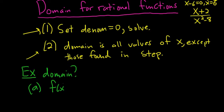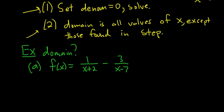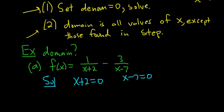Example a: f(x) = 1 over x plus 2, and f(x) = negative 3 over x minus 7. To find the domain, set the denominators equal to 0. So, x plus 2 equals 0 gives x equals negative 2, and x minus 7 equals 0 gives x equals 7. The domain is everything except these numbers.